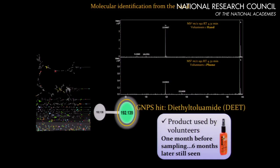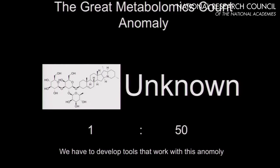Here's an interesting one — when we saw the molecule DEET, we talked to the person it belonged to. What we found out was that they had not applied it until at least one month before sampling. Recently, we tested it again — six months later, we still see it on their hands. You would imagine it would wash off quite readily. Where we've traced it to is the transfer from the phone back to the hand and vice versa.